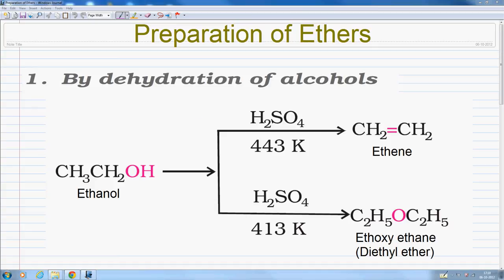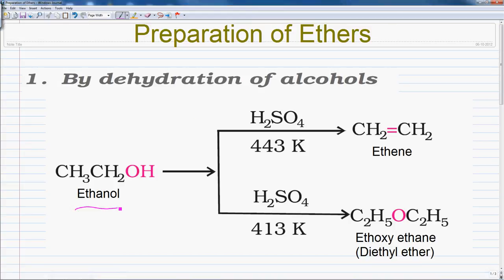Today we are going to learn a preparation of ether. The first process is the preparation of ether by dehydration of alcohol. In this reaction, the alcohol is first treated with protonic acids such as H2SO4 or H3PO4. Alcohol undergoes dehydration in the presence of protonic acids — that means a water molecule is removed from alcohol.